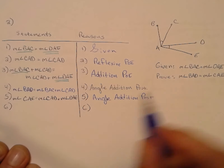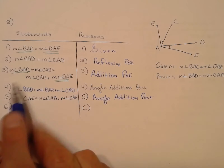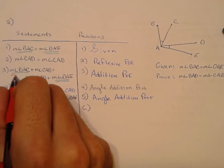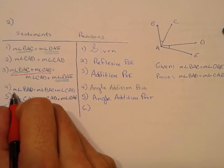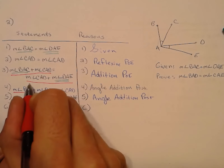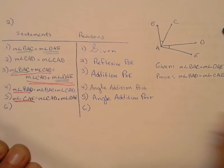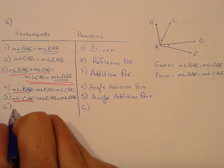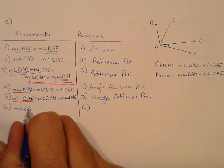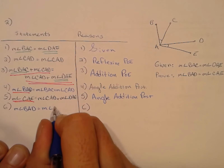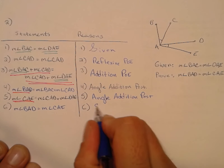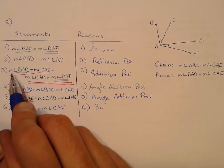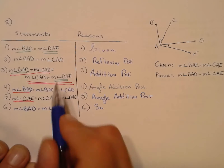Then if I rewrite statement number three — with some colorful underlining — substituting this fact in for the left-hand side and this fact for the right-hand side, that gets me exactly to where I want to go: the measure of angle BAD equals the measure of angle CAE. Basically, I've substituted statement four in for the left side and statement five in for the right side.